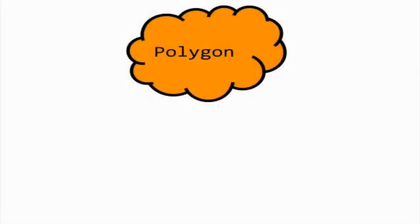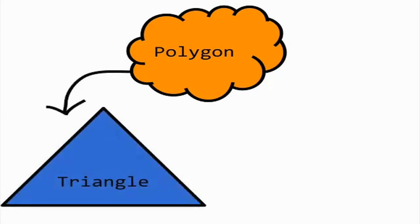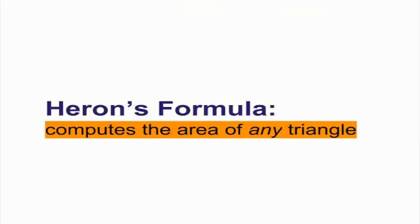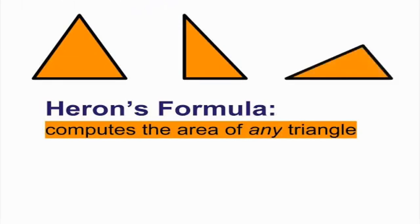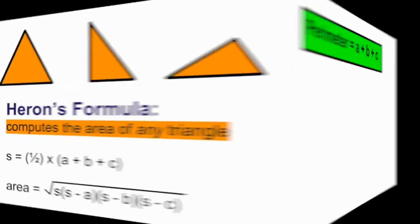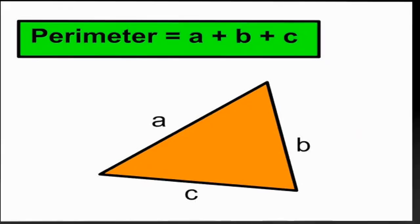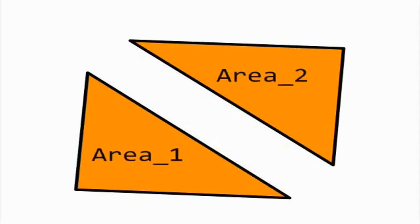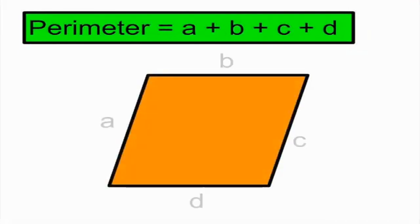Basically, a polygon is a two-dimensional space enclosed within straight edges. The minimum number of edges is three, so we can start implementing the virtual methods of polygon in triangle. We can find the area of any triangle using Heron's formula: let s equal one-half times each of the side lengths of the triangle, then compute the area as the square root of s times (s minus side length a) times (s minus side length b) times (s minus side length c). To get the perimeter, we simply add up the side lengths. For any cyclic quadrilateral — one that can be inscribed in a circle — we compute the area by dividing it into two triangles and applying Heron's formula to each, then adding the two triangle areas together. To get the perimeter, we add up the side lengths as we do for triangle.